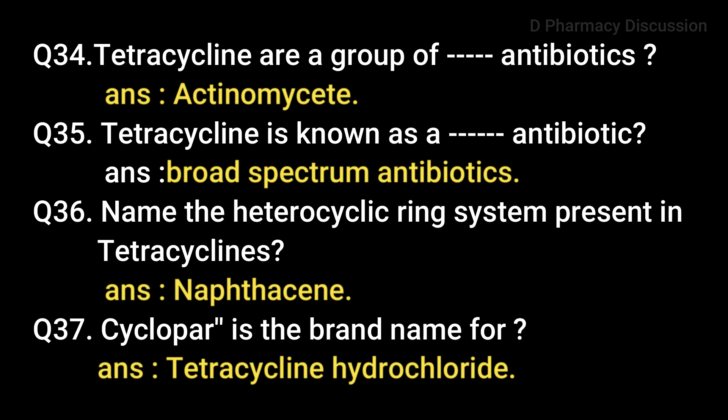Tetracyclines are a group of actinomycete antibiotics and are commonly known as broad spectrum antibiotics. Tetracycline is a bright yellow, odorless crystalline salt and should be stored in airtight containers protected from light, as it darkens in strong sunlight and moist atmosphere. Tetracyclines are used in treatment of rickettsial infections, trachoma, conjunctivitis, mycoplasmal infections, urinary tract infections, and malabsorption syndromes. The heterocyclic ring system present in tetracycline is naphthazine. Question 37: Cyclopar is the brand name for tetracycline hydrochloride.